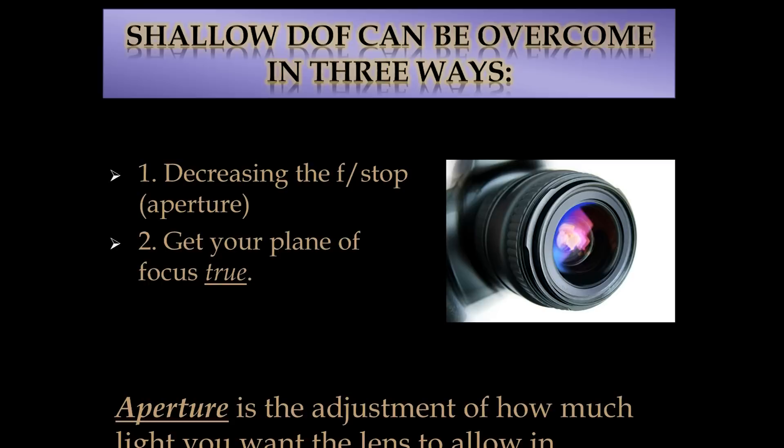The second way to deal with shallow depth of field is to get your plane of focus true. If you get exactly perpendicular to your subject — like a hundred dollar bill — if I'm at an angle, one end is facing me and the other is away, so I have foreground, middle ground, and background in varying focus. Whereas if I stand directly over the bill, the entirety is exactly in the same plane as my lens, so I get a true plane of focus. Same thing with a butterfly — if I get directly over it, I have a true plane of focus.